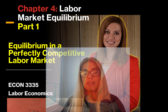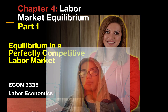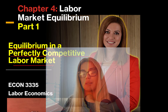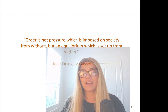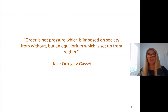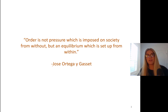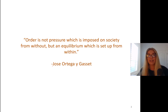In part 1 we will talk about equilibrium in a perfectly competitive labor market. A perfectly competitive labor market is characterized by many workers and many employers. Each worker is identical, and the interesting part is that everybody is paid the same — because they're identical. There's a nice quote here: